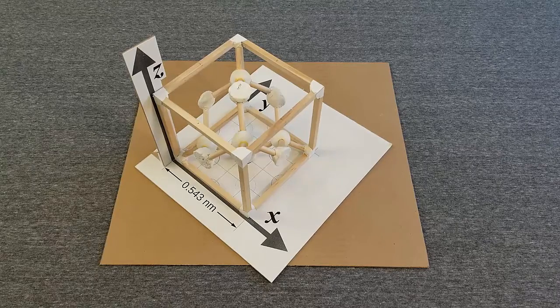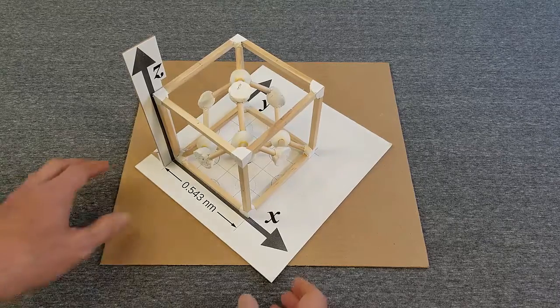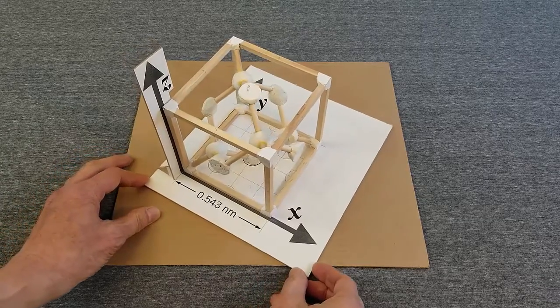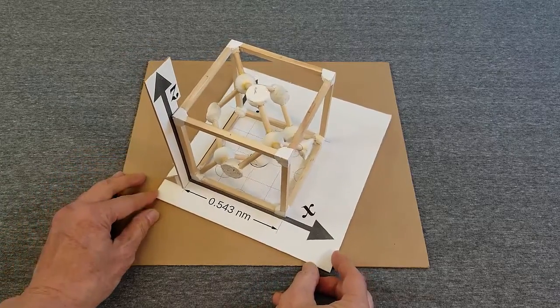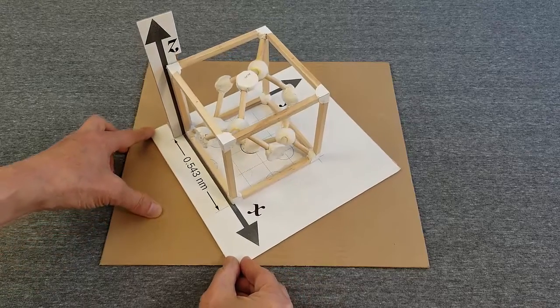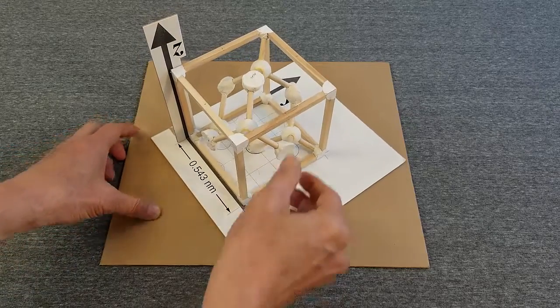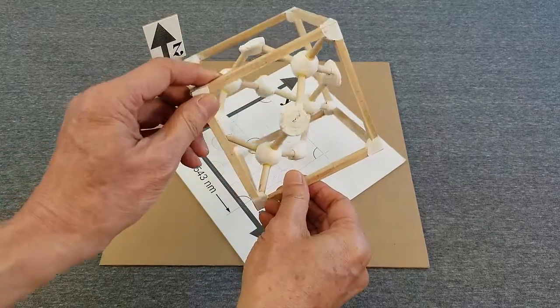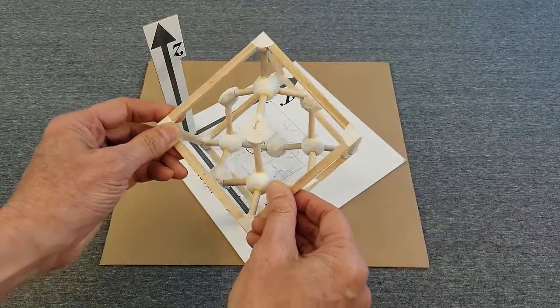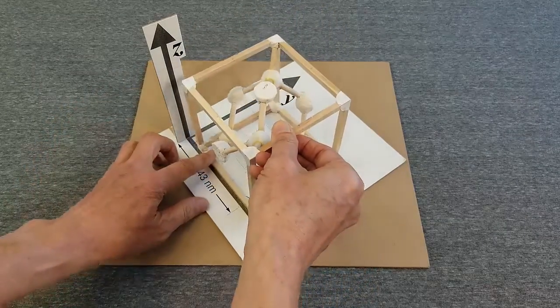This is a model of the silicon unit cell. Each ball represents a silicon atom. The orientation of this atomic structure affects the electrical, chemical, and physical properties of the silicon surface used to make integrated circuits.